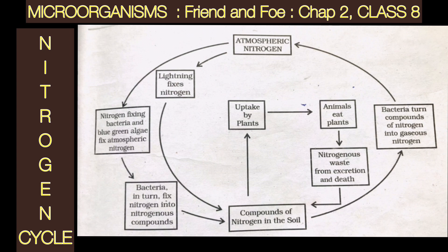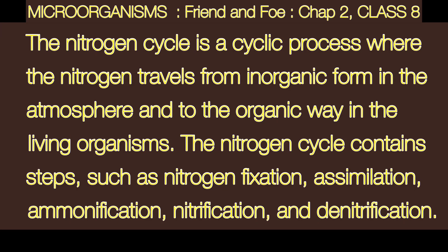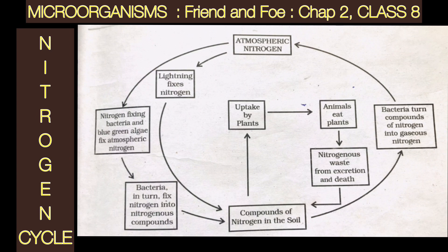Who is fixing this nitrogen? It is either the nitrogen-fixing bacteria, or with the help of lightning, this nitrogen is fixed and converted into nitrogenous compounds. These compounds go into the soil, which are then used by plants. When animals eat those plants, the nitrogen is also taken up by them. Finally, when plants and animals both die, decay happens and the nitrogen in gaseous form is again released into the atmosphere.